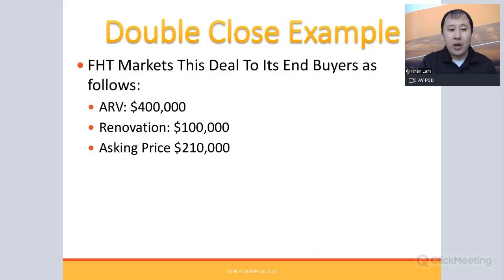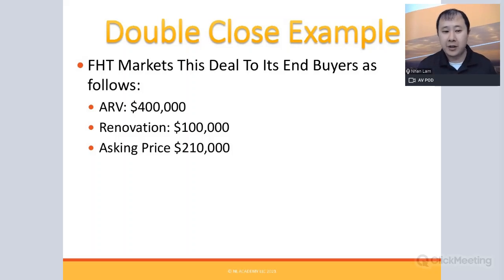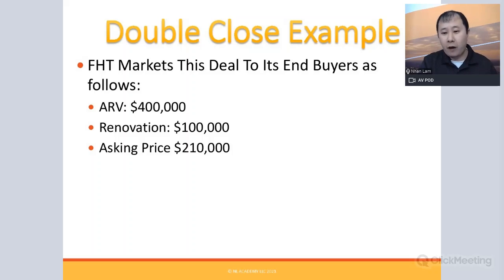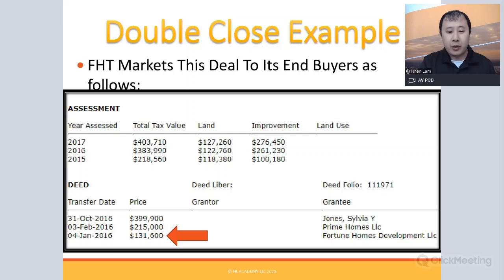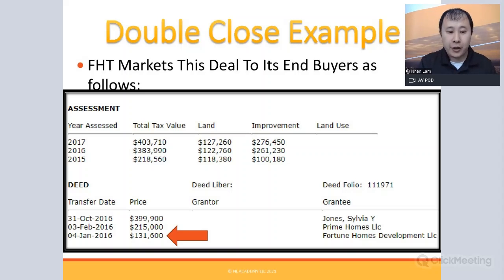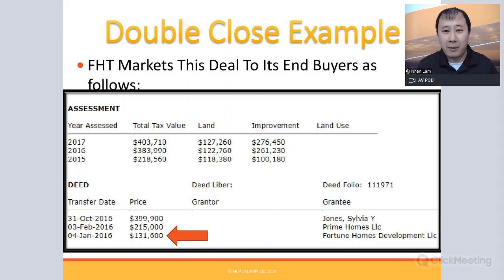We marketed the deal to our end buyers showing the ARV of $400,000 after $100,000 in renovation, asking $210,000. We held open houses, received offers, and sold to an investor for $215,000. Six months later, they sold for exactly $400,000 — right on our advertised ARV — which builds tremendous credibility with fix-and-flip rehabbers.